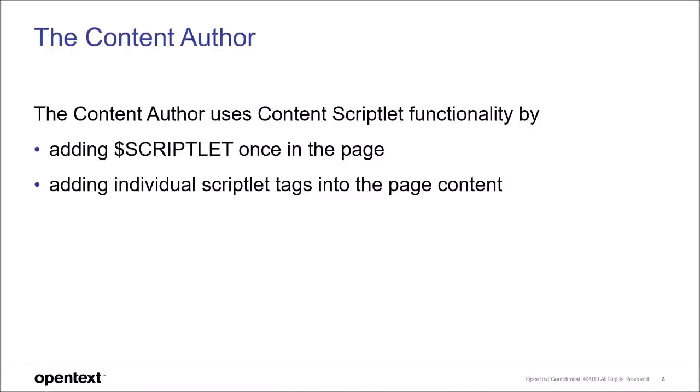Content Authors use Content Scriptlets in two steps. First, they add the scriptlet token once in the page content before the first occurrence of scriptlet tags. This enables the scriptlet interpretation when rendering the page. Once activated, Content Scriptlets are used in the same way as, for example, WordPress shortcodes. The Content Author adds the functionality of the individual scriptlets by including their tags into the page content.